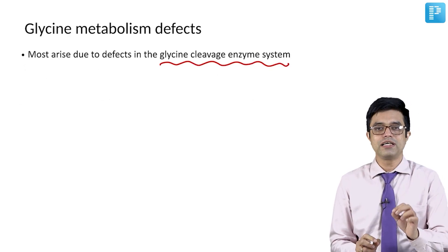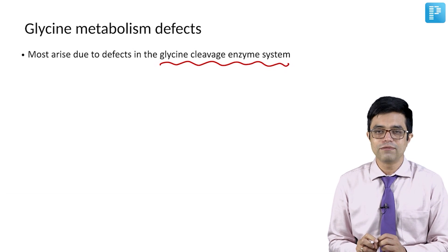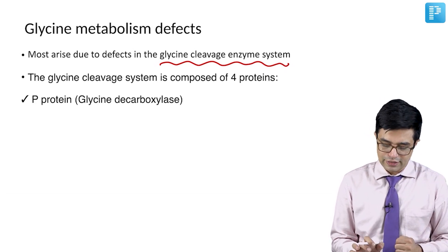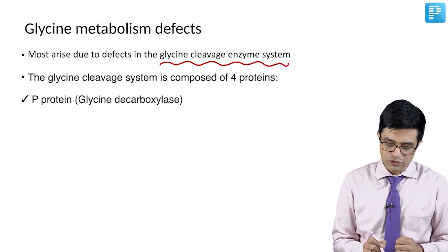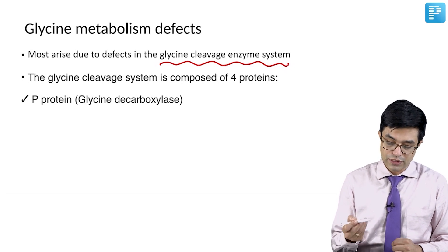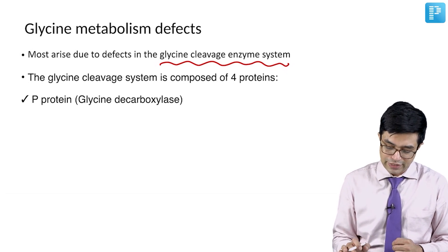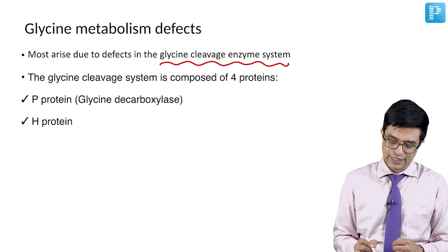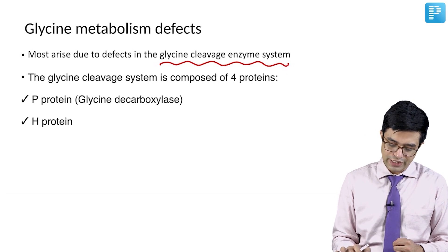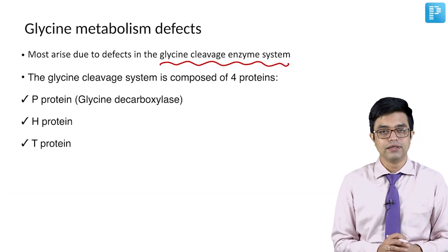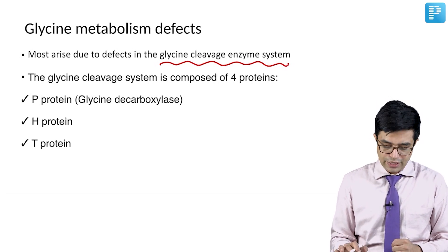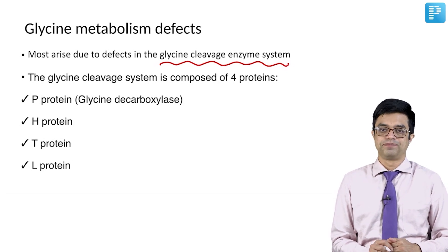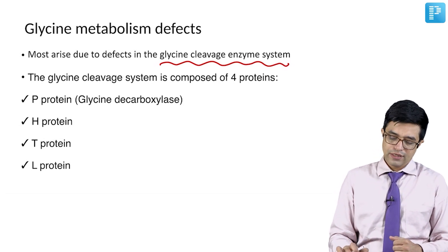Most glycine metabolism defects arise due to a defective cleavage enzyme system. There is a specific cleavage enzyme system which comprises four proteins: the P protein — the most important component, also called glycine decarboxylase — the H protein, the T protein, and the L protein.